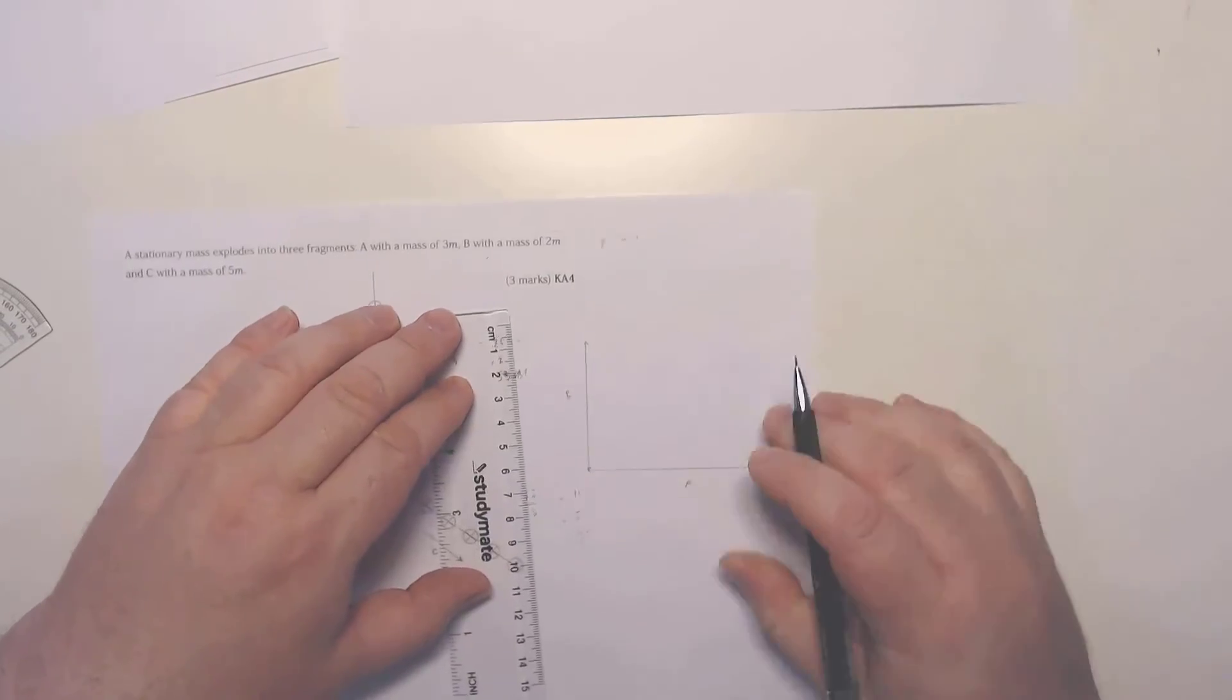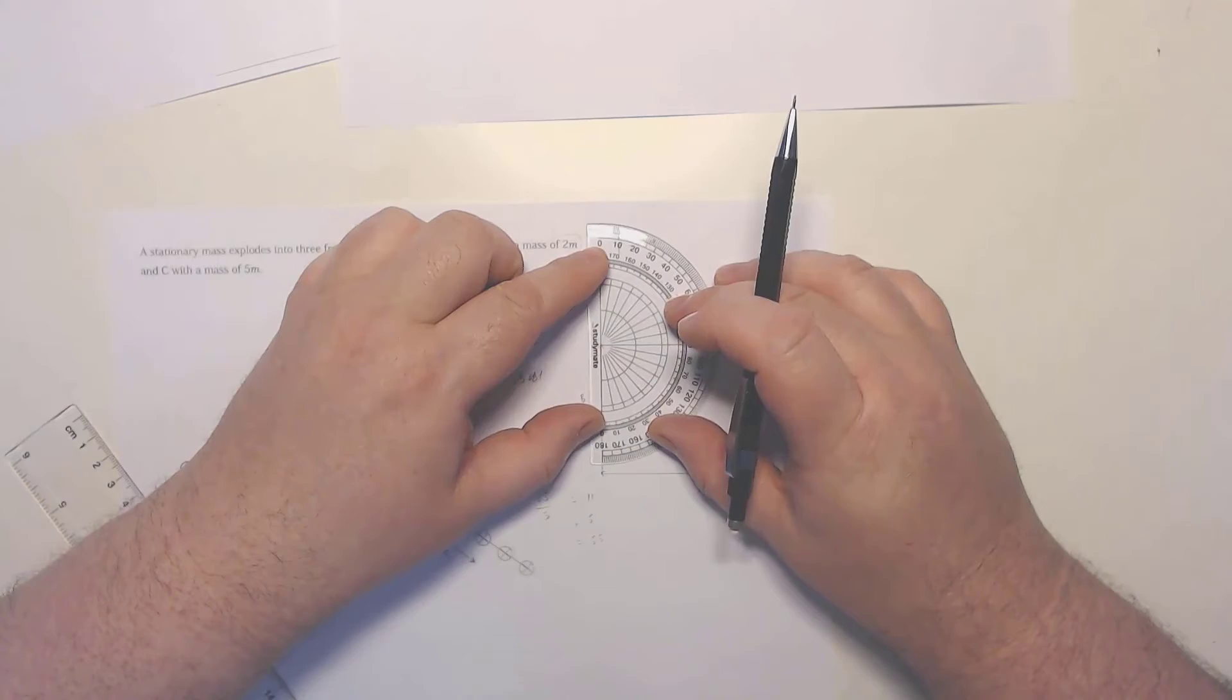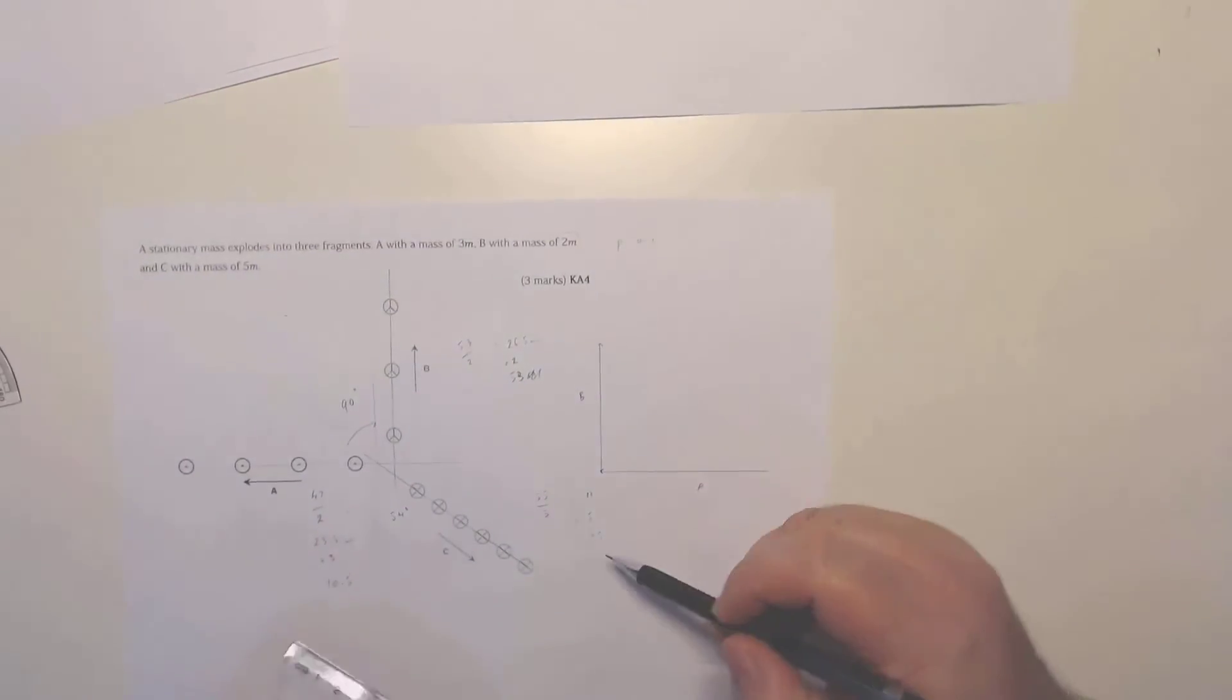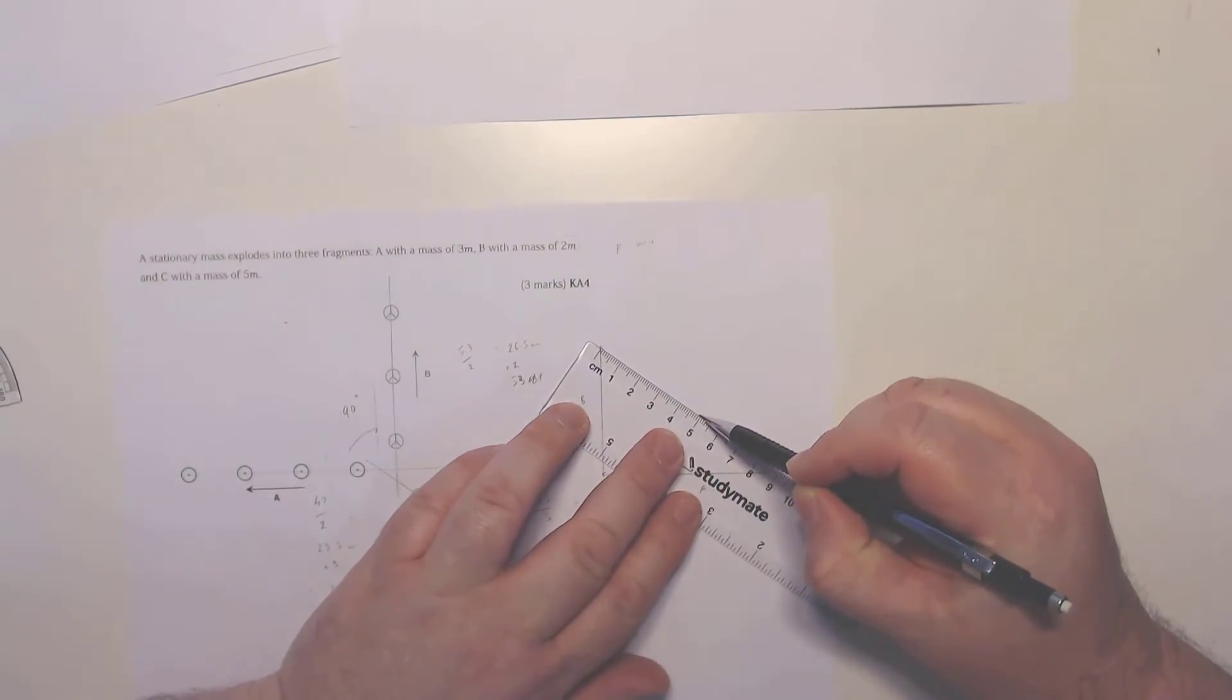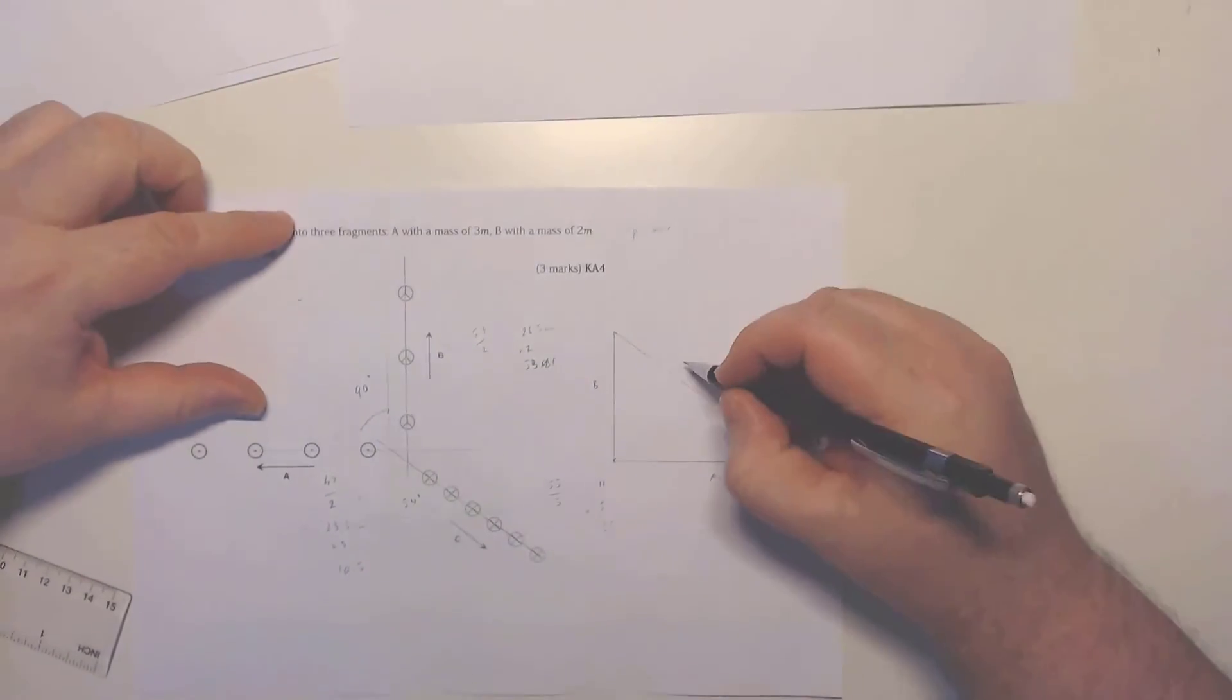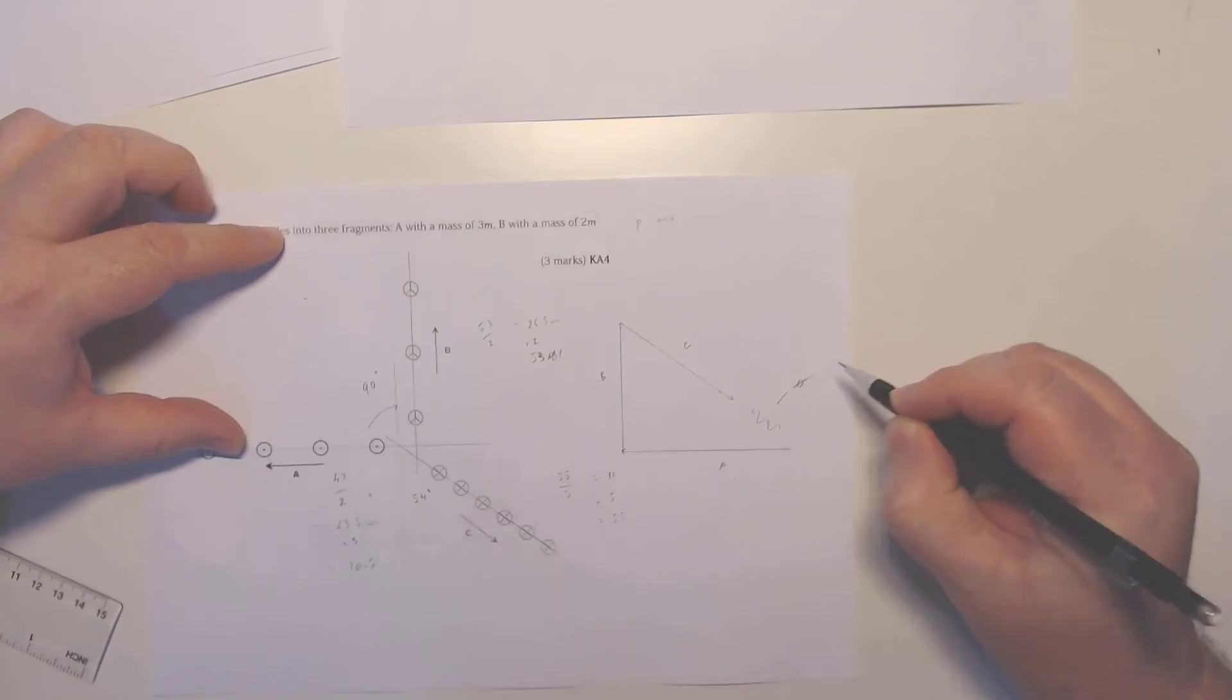And then vector C, 54 degrees. So I'm just going to carefully do that, 55 degrees, 54 degrees. That length here actually has to be 55, so positioning that on the one there, measure the 55, and draw my vector there. As you can see, vector A plus B plus C does not return to zero.